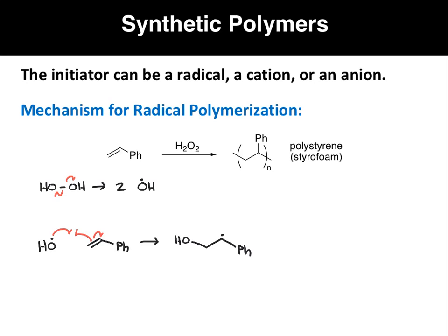So we have that radical. Just like before, we have a radical that can react with a second molecule of styrene. That radical will pair up with one electron in this pi bond, and we'll put a single electron on the carbon containing the phenyl group. Now I'll draw our new bond in red, and now we have another styrene unit added. This will continue to add monomer units until you have a large molecule containing many of these repeating units.